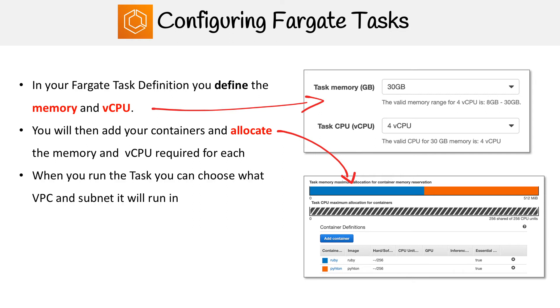When you run the task, you can choose what VPC and subnet it will run in. A lot of people think that there are no VPCs or subnets with Fargate because it's serverless containers, but that's not true — you do have flexibility around that.